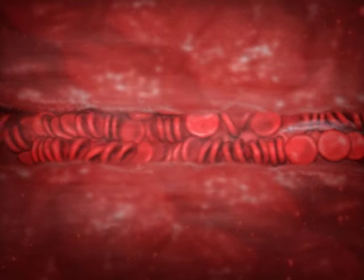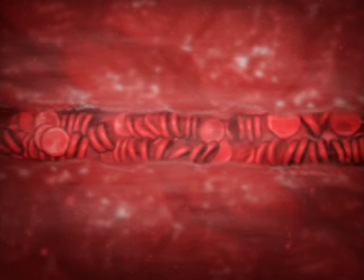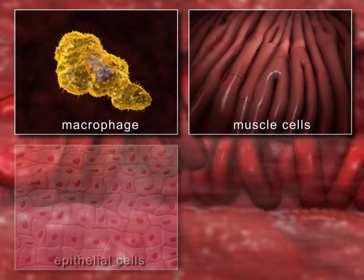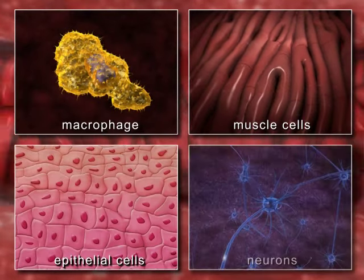The parasite reaches the mammalian bloodstream and subsequently invades different cell types that it encounters, such as macrophages, muscle cells, epithelial cells, and neurons.